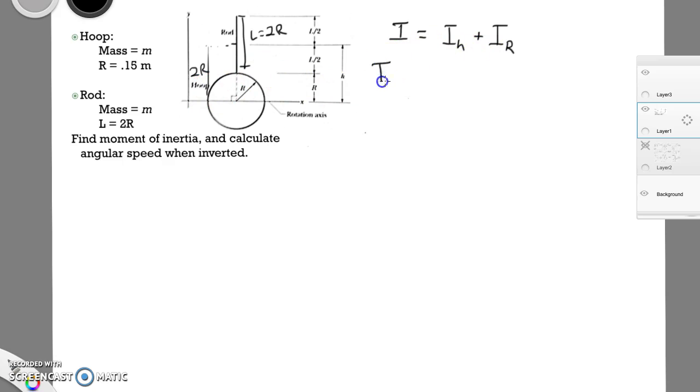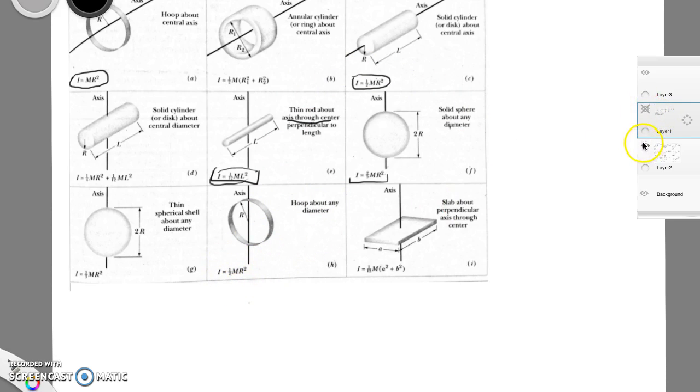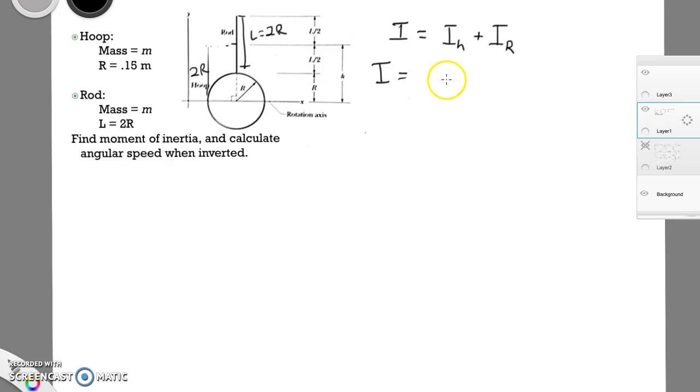So let's start with the hoop. If the hoop was rotating about its center like this, it would be MR squared. It's not, so let's look at our table. And it's going to look like this. So a hoop about any diameter is going to be 1 half MR squared. So for the hoop, it's going to be 1 half MR squared.